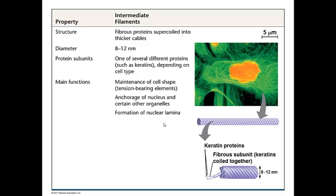Next we have the intermediate filaments. These are about 8 to 12 nanometers wide and are involved primarily in maintenance of cell shape in the context of tension. They resist mechanical stress because they provide strength. In addition they anchor the nucleus and some other organelles and form the nuclear lamina that surrounds the nucleus and gives it structure.